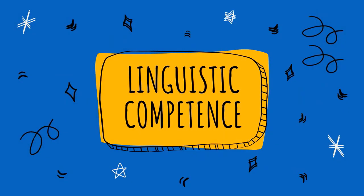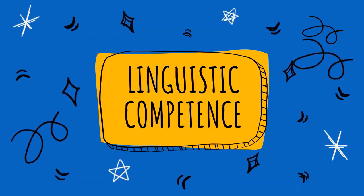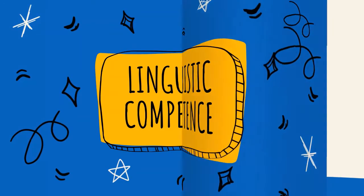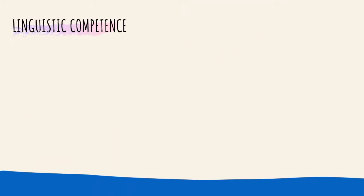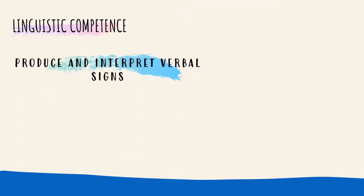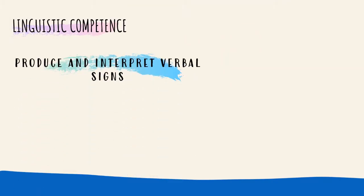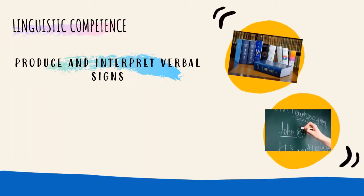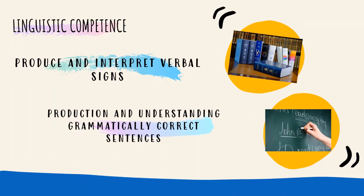We are going to start with the linguistic competence. It's the capacity to produce and interpret verbal signs, allowing the person to produce and reproduce an infinite number of sentences. It includes the production and understanding of grammatically correct sentences.